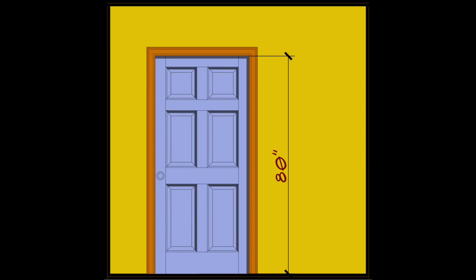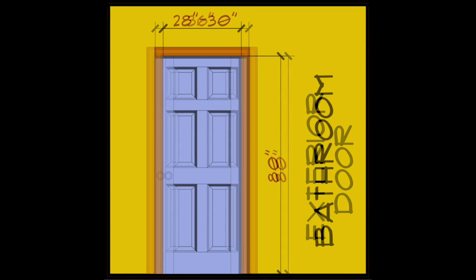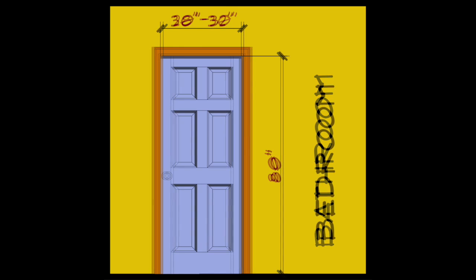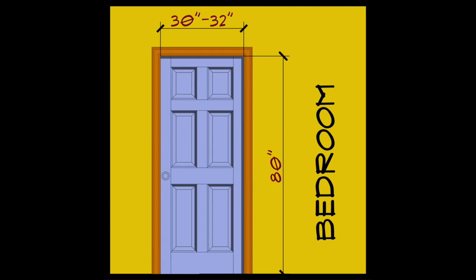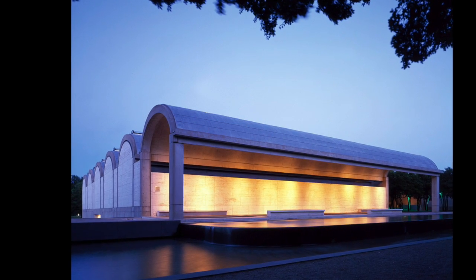A typical residential door in the US is 80 inches tall. Exterior doors should be 36 inches wide, bathroom doors are typically 28 to 30 inches, and bedroom doors can be 30 to 32 inches wide or more.